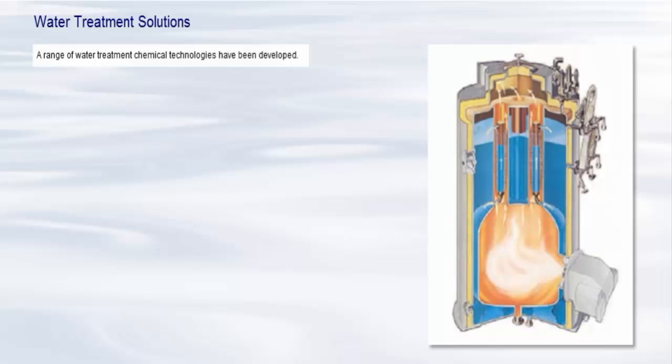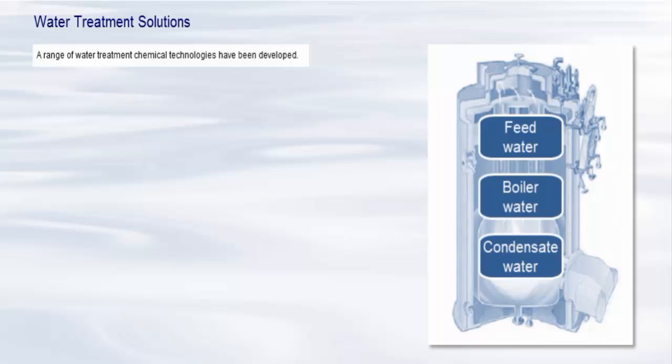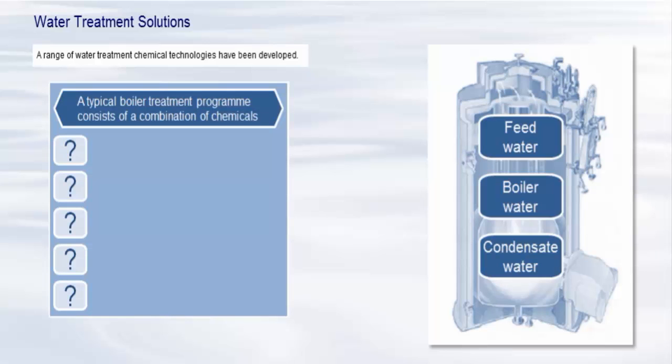To address the problems of scaling and corrosion, a range of water treatment chemical technologies have been developed. These are applied to adjust the properties of the feed, boiler and condensate waters and provide protection of the system metalwork. A typical boiler treatment program consists of a combination of chemicals.